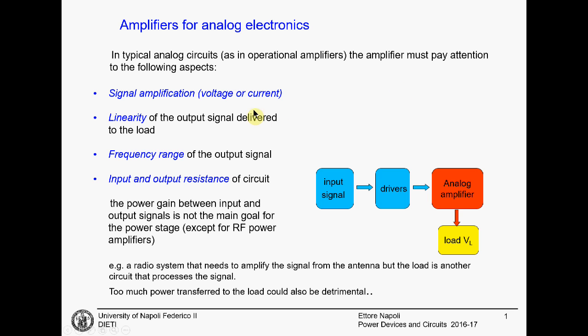We have these amplifiers in analog electronics. Some of them also need to carry a large amount of current, so they are power amplifiers. The most important aspect we study for these amplifiers is how much they amplify the signal — the amplification. It is also very important that these amplifiers are linear, because the typical application is the loudspeaker. You want to amplify the voice and music and bring it to a loudspeaker; if you don't have linearity, the music and voice are not reproduced nicely. Linearity is very important.